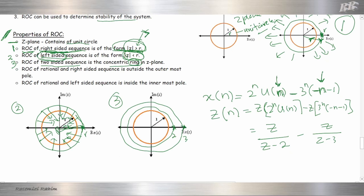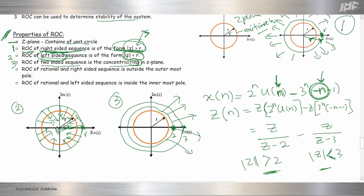The positive (right-sided) part gives |Z| greater than 2. The negative (left-sided) part gives |Z| less than 3. So for the two-sided sequence, the ROC is 2 < |Z| < 3 — greater than 2 and less than 3.